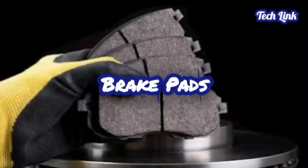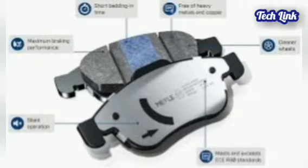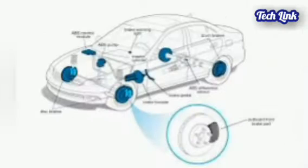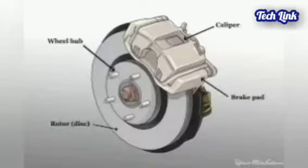Brake pads are flat steel pieces with a thick friction layer, such as rubber, on one side — that is the composition of brake pads. When it comes to braking, the type of vehicle, size, and type of brake caliper affect the friction material used.